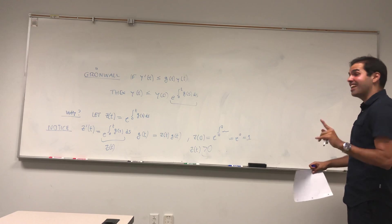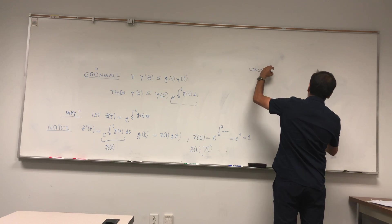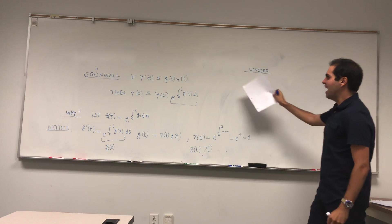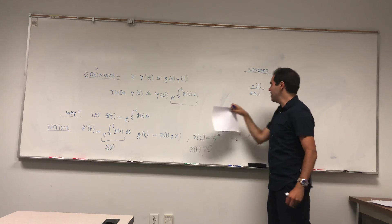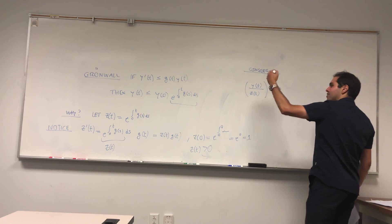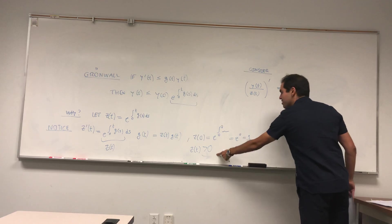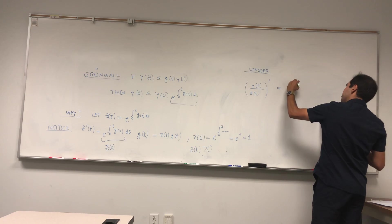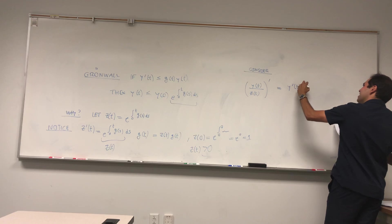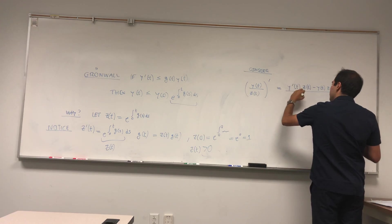Now comes the actual proof. Consider the quantity y(t)/z(t), where y satisfies our differential inequality and z is this positive helper function. We can legitimately divide by z because it's positive. Applying the quotient rule, the derivative is [y'(t)·z(t) − y(t)·z'(t)] / z(t)².